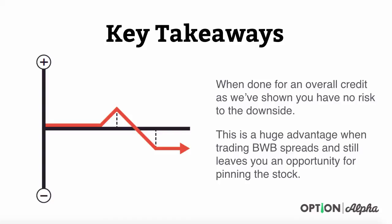Some of the key takeaways for these broken wing butterflies: when they're done for an overall credit like we've shown, you have no risk to the downside. I definitely believe that when you trade these types of strategies, you should look to take in a credit. This is a huge advantage when trading broken wing butterflies and still leaves you an opportunity to profit from pinning the stock. We have an opportunity not only to make money if the stock goes down by taking in a credit, but we get the opportunity to make even more money if we're directionally right and the stock doesn't move much or moves down slightly between now and expiration.